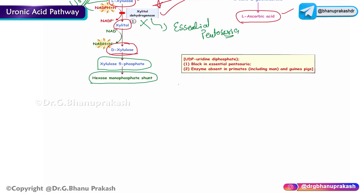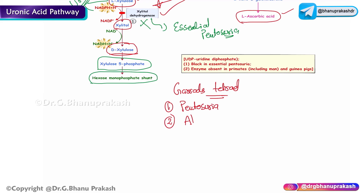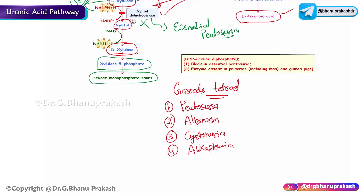Garrod's tetrad consists of four conditions: pentosuria, albinism, cystinuria, and alkaptonuria. Essential pentosuria is one of the important components of Garrod's tetrad, caused by deficiency of the enzyme xylitol dehydrogenase.